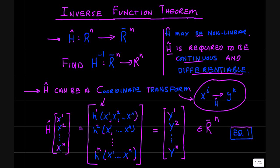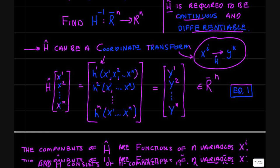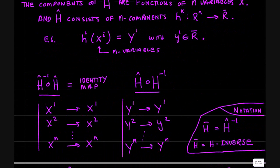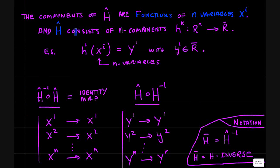So how do we go about finding the inverse function of h? The function h consists of these n components h_k. And each one of the functions h_k is a function of n variables here. And it maps to a single variable in R.